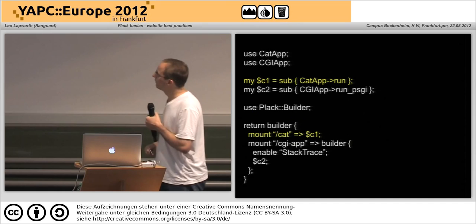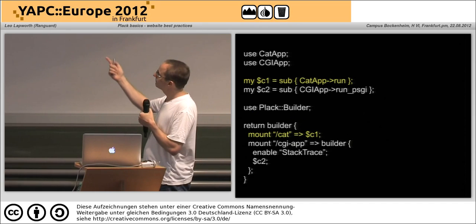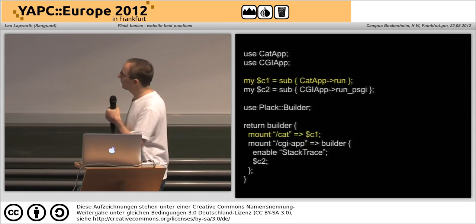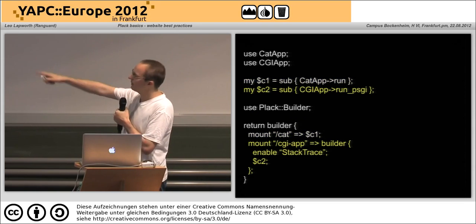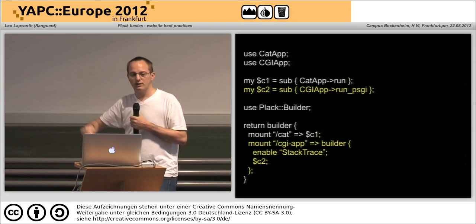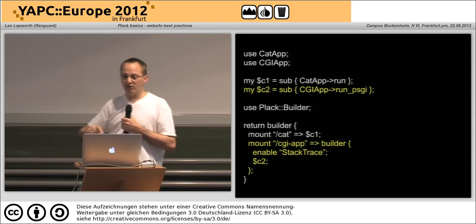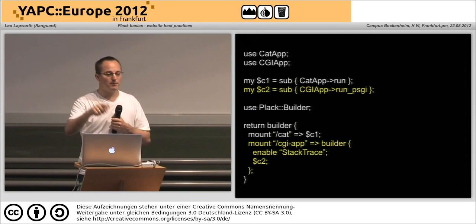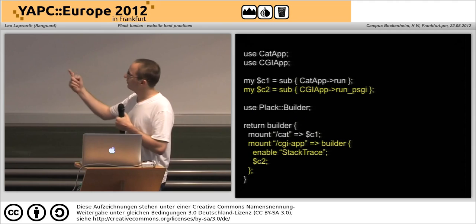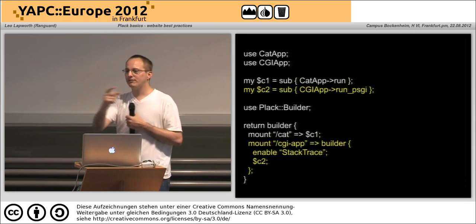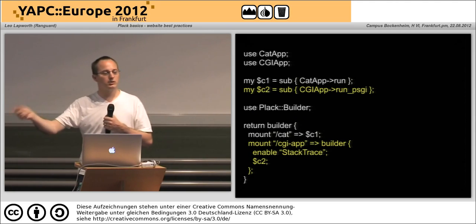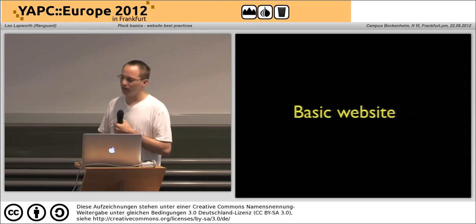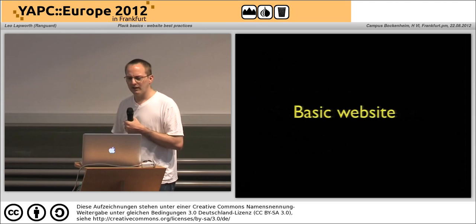A useful one is the URL map. For example, here we have a Catalyst application C1 and a CGI application C2. I'm going to mount C1 on /cat, and C2 — which I'm going to have custom middleware added to — I'll mount onto /cgi-app. So you can have multiple applications mounted on different URLs on your domain.